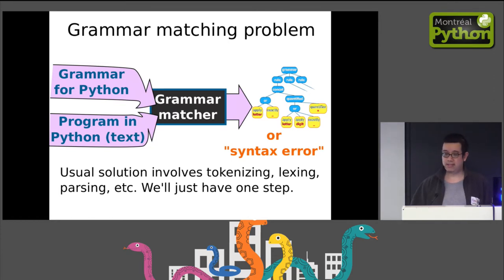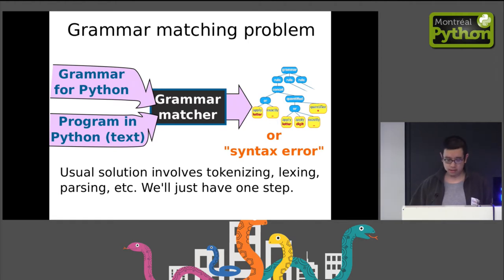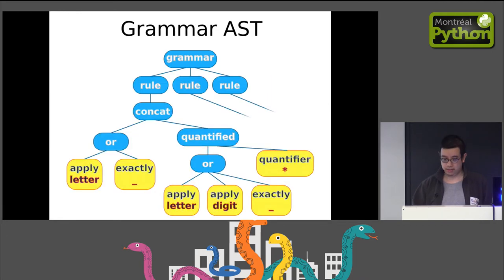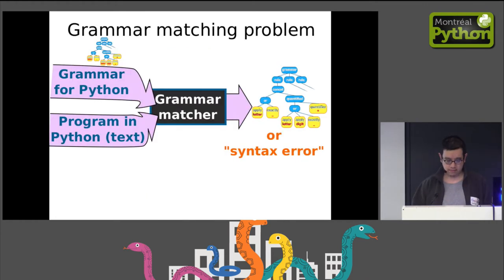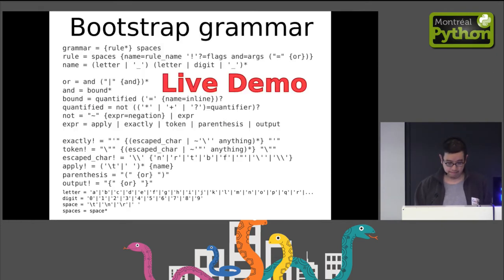Usually this step involves multiple sub-steps like tokenizing, lexing, and parsing. But in this implementation we'll just have one step to go from these two inputs to the output we want. The grammar we give as first input is also going to be represented as an abstract syntax tree — it's an AST describing some language. It also usually has a textual representation which can be turned into this. The main function we're going to use for parsing takes an AST and a piece of text and turns it into the AST of the second input.